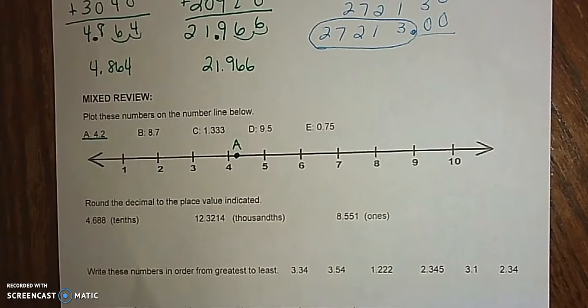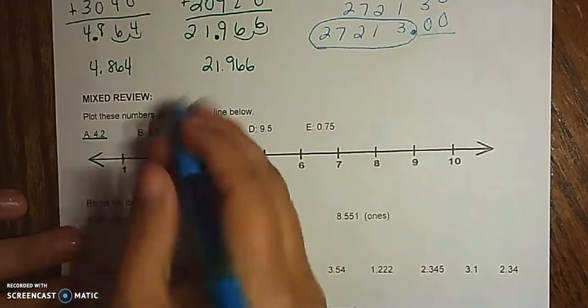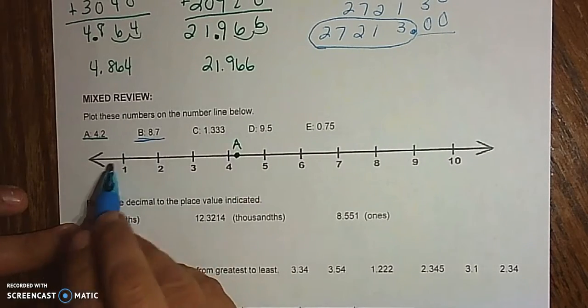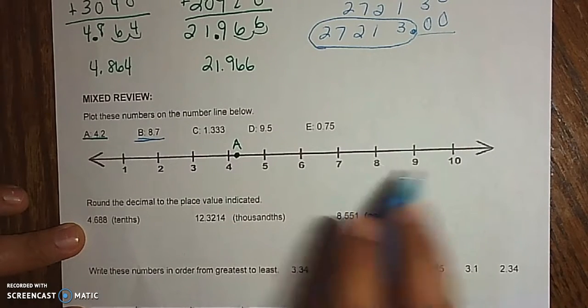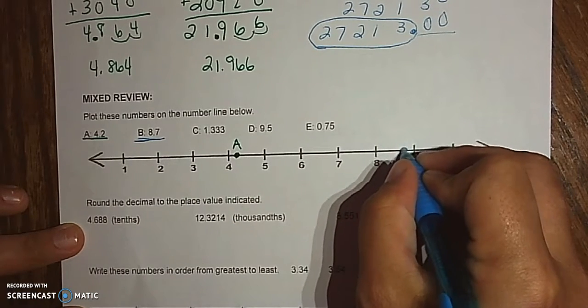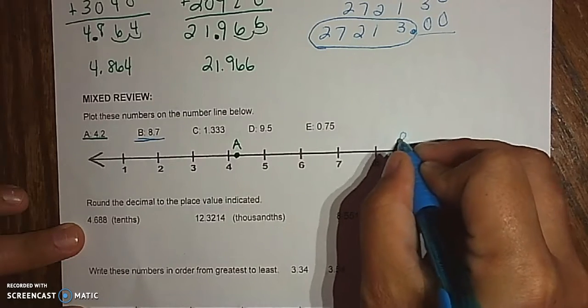I'm going to use different colors. Hopefully you can see them. For B, 8.7, so that's more than 8, so there's 8.7 is more than half. There's my B.